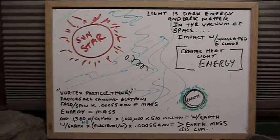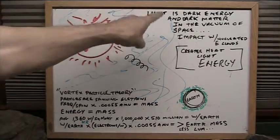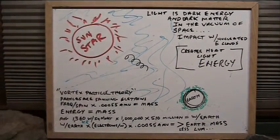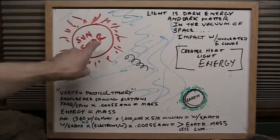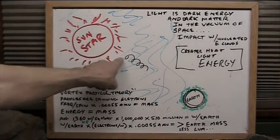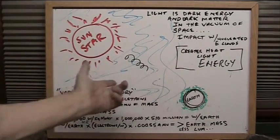I'm going to make this extremely short. It's very simple. I am saying that light is dark energy, and it's also dark matter, and it's in the vacuum of space as it travels from the sun. It's obviously traveling from the sun. We know that. And it's heading towards the earth. It hits the earth. We know that.